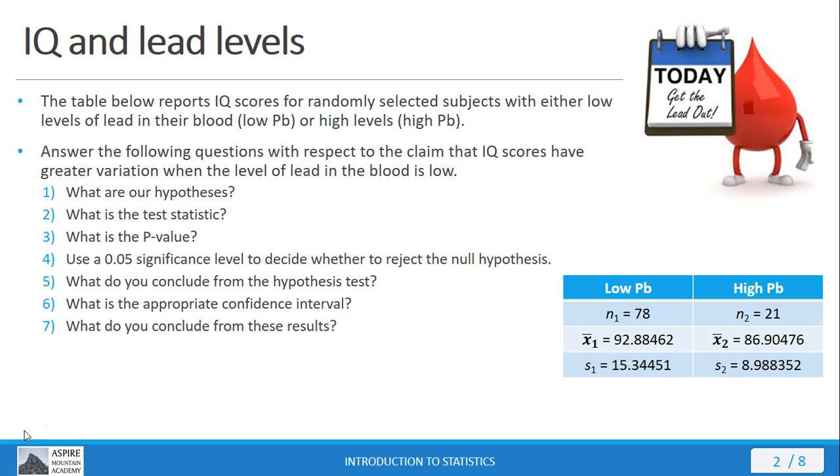We've got the same seven stock questions that we're typically asked with these types of problems. The claim here is that the IQ scores have greater variation when the level of lead in the blood is low.